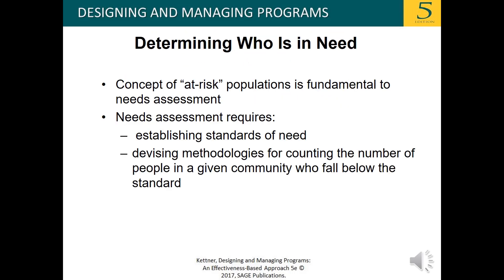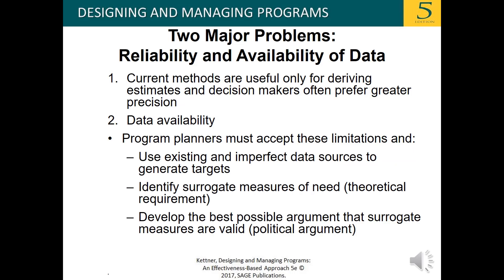Determining who is in need is another important consideration. The concept of at-risk populations is fundamental to needs assessment, which requires establishing standards of need and devising methodologies for counting the number of people in a given community who fall below that standard. Two major problems are the reliability and availability of data. Current methods are useful only for deriving estimates, and decision makers often prefer greater precision. Program planners must accept these limitations and use existing, imperfect data sources to generate targets, identify surrogate measures of need, and develop the best possible argument that surrogate measures are valid — which is oftentimes a political argument.